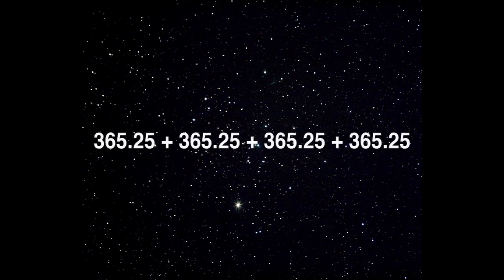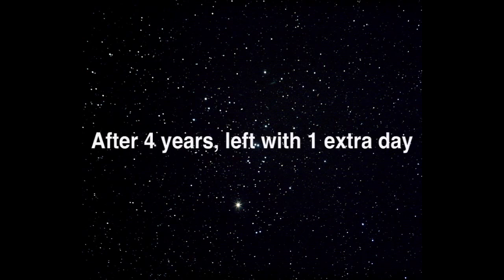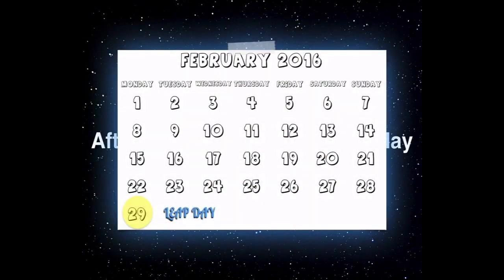Our next motion is revolution. Revolution is the path the Earth takes around the Sun, and that path is slightly elliptical, which means oval-shaped. That motion takes 365.25 days to accomplish.